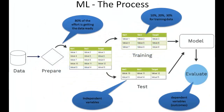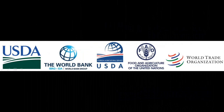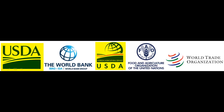In most machine learning processes, 80% of the effort is getting the data ready. The main input to a machine learning algorithm is the data, and preparing the data is usually the biggest effort. In this study, we collected data from multiple sources — we scraped and gathered data from the United States Department of Agriculture Foreign Ag Services (FAS) as well as Ag Marketing Services (AMS).